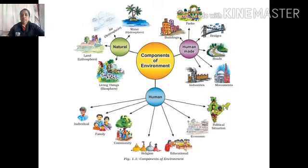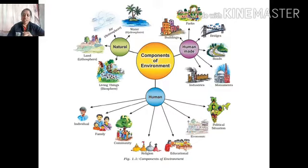The basic life support system can be divided into two categories: natural and human-made. Natural components are air, water, plants, and animals. Human-made components are roads, cars, vehicles, etc.